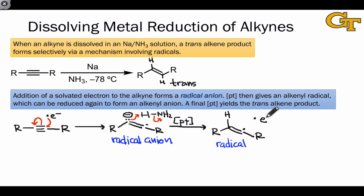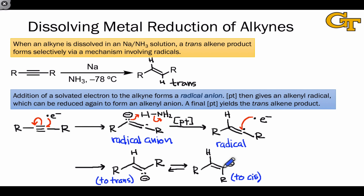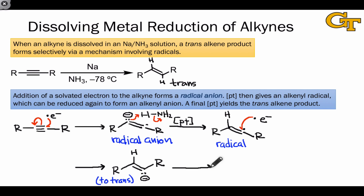This species can undergo a second reduction by the solvated electron, using a single arrow to the carbon that accepts the radical electron. The product is not a radical anion but simply an alkenyl anion. Now we do have to worry about stereochemistry, since this alkenyl anion can have two different geometries: one in which the lone pair is cis to the R-group, and one in which it is trans. The intermediate with the lone pair trans to the R-group leads to the trans product, since the R-groups are oriented trans to each other. Due to the size of the R-groups and steric interactions, the alkenyl anion isomer leading to the trans product is heavily favored over the cis isomer.